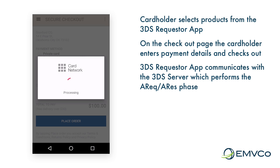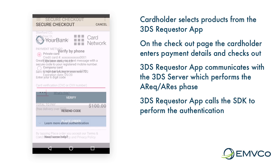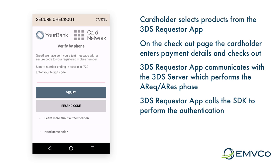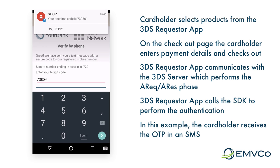In this particular example, the ACS determines that they require a challenge to the cardholder in order to authenticate the transaction. The 3DS Requester app then communicates to the SDK to initiate the challenge flow, and the SDK creates a secure connection between itself and the ACS using information received in the authentication response message. The SDK then displays the one-time passcode 3DS 2.0 screen, and the cardholder is able to enter the one-time passcode they have received.